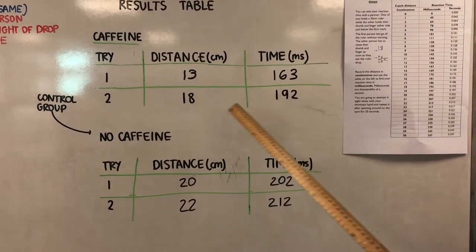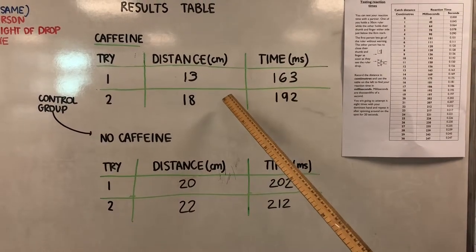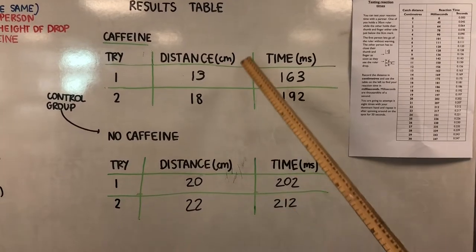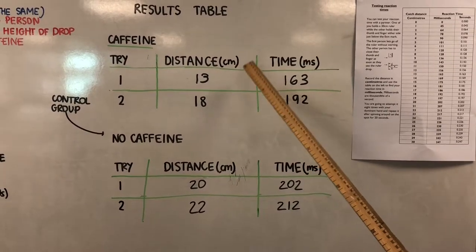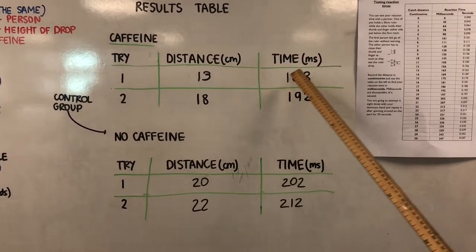As you can see from our results table, the distance was shorter when the caffeine was ingested than when the caffeine wasn't ingested. This means that reaction time was quicker when the caffeine was ingested than when the caffeine was not ingested, and you can tell this by the time.